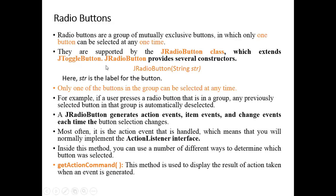JRadioButton provides a constructor: JRadioButton(String str). The string you pass within the parentheses is the label for your button. Only one button in the group can be selected at a time. You can have two, three, or more than three radio buttons, but you can select only one option — it is like a multiple choice question where you are given four options and you select only one.